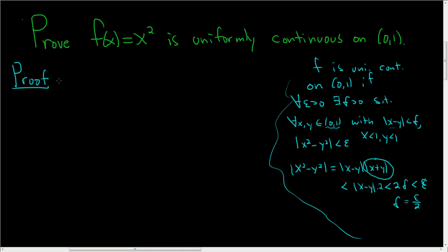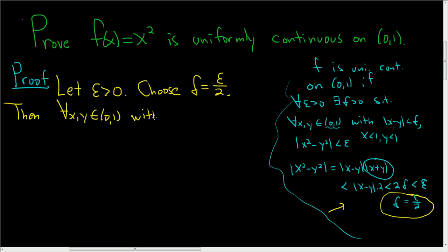We have to start the proof by letting ε be greater than 0. And then we have to find the δ. Well, we did that before going into the proof. We said our δ was going to be ε/2. So choose δ = ε/2. Then for all x, y in the open interval (0,1) with the distance between x and y being less than δ, we have...